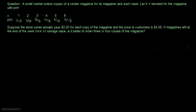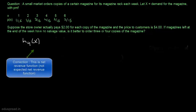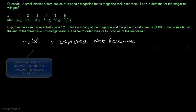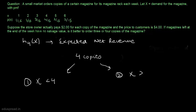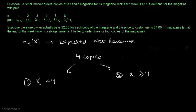Now let's calculate the expected net revenue when the store owner orders 4 copies of the magazine, denoted h4(x). When he orders 4 copies, there are again two cases: demand less than 4 — he cannot sell all copies purchased — and demand greater than or equal to 4 — he sells all copies.